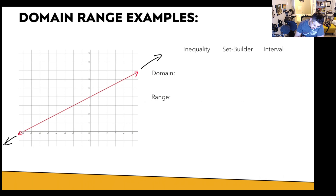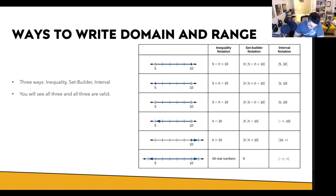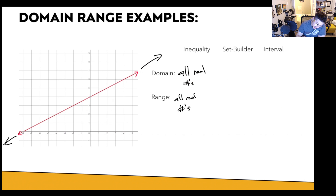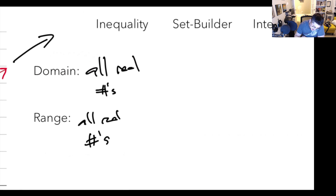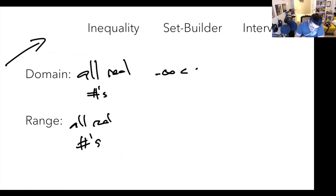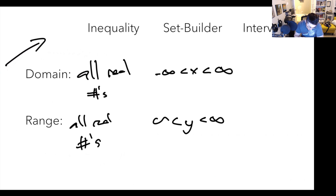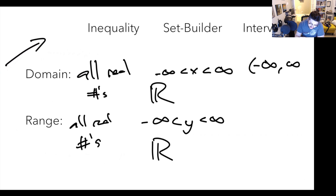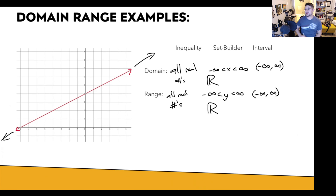For a function that keeps going in both directions, our domain and range are all real numbers. We can write that as negative infinity less than x less than infinity, or the same for y. There's also a symbol — an R with two lines — for all real numbers. In interval notation, that's negative infinity to positive infinity with parentheses. That's everything.